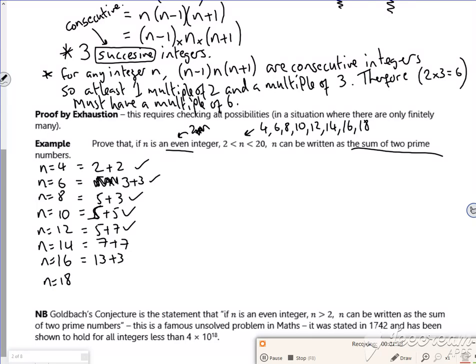n equals 18 could be 13 plus 5. So I've proved it.